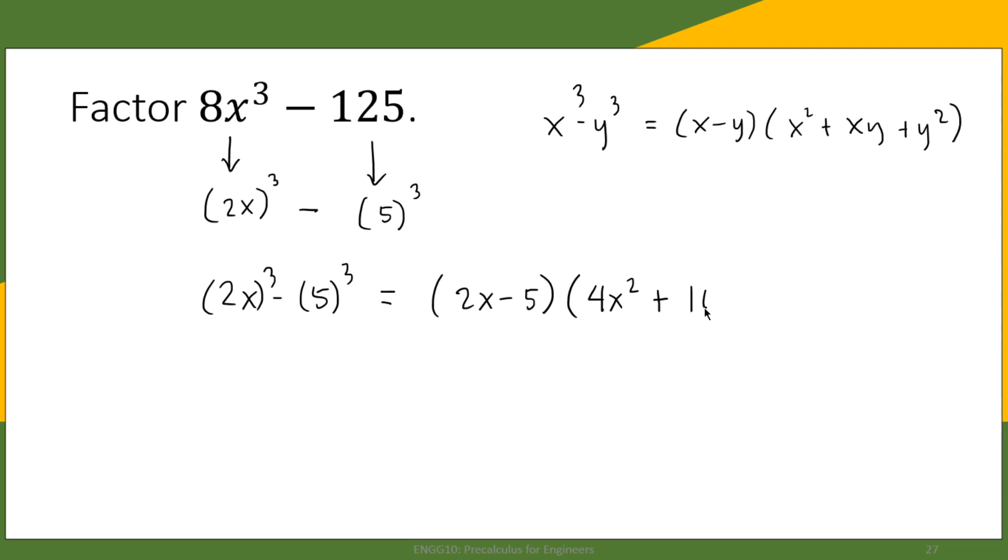and then the square of the second, that's 5², so that's 25. This is the product now, or the factors now of the given polynomial.